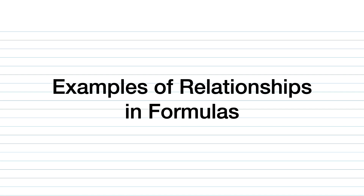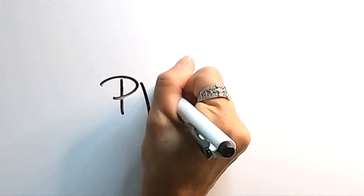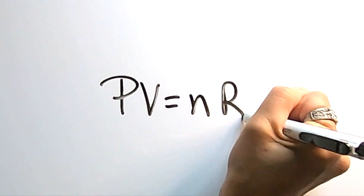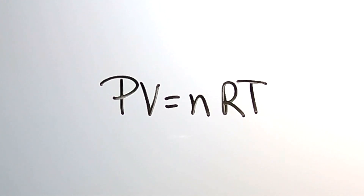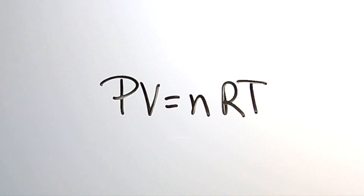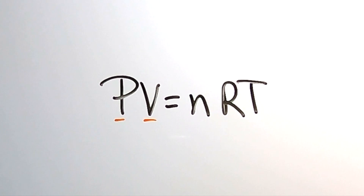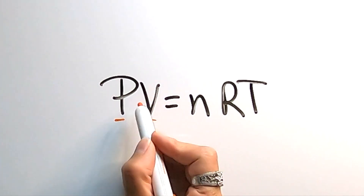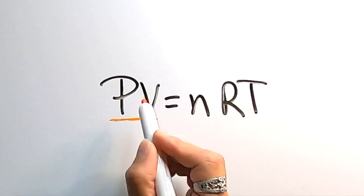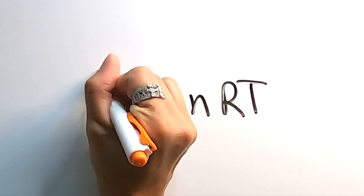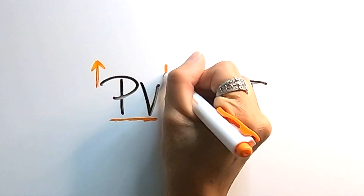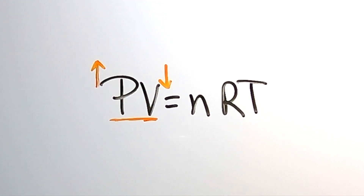Let's practice with determining the relationship between variables in certain math and science formulas. Here's a popular one: PV equals nRT, the ideal gas law from chemistry class. What's the relationship between pressure and volume? Notice they're both on the same side of the equal sign and both in the numerator, which means they are indirectly related — as pressure increases, volume will decrease, or vice versa.